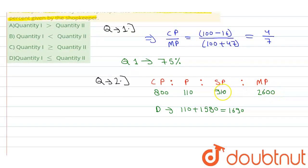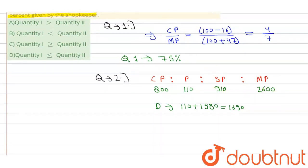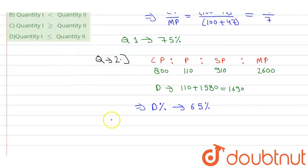An article marked at 2600 is being sold for 910. From this, we can calculate the discount percentage. The discount percentage comes to 65 percent, and this 65 percent is the value of Quantity II.